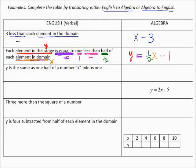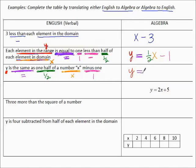Let's try another one: 'Y is the same as one half of a number X, minus one.' So Y is the same as — that's an equal sign — one half of a number X, and then minus one. Y = ½X − 1. Notice that yields the exact same equation as the previous one, just said in a slightly different way.